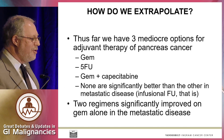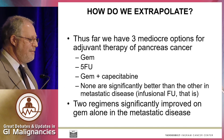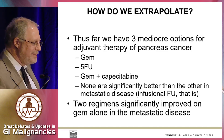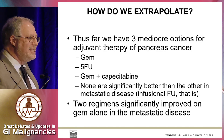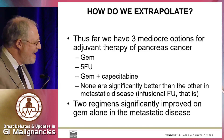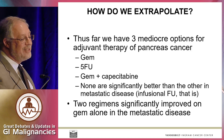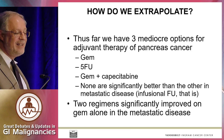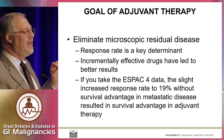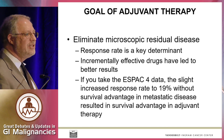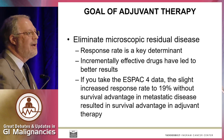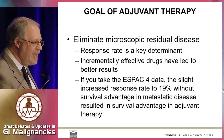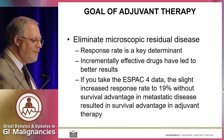So thus far, we have three mediocre options for adjuvant therapy of pancreas cancer: Gem, 5FU, and GemCape. You can argue that GemCape is better than the others, but of course — as Axel and Dr. Ilson sit late at night planning these meetings, going 'let's give Jordan a topic that has zero data whatsoever to debate' and then snickering — two regimens significantly improved on Gem alone in metastatic disease. Our goal here in adjuvant therapy is to eliminate microscopic residual disease. Response rate is the key determinant for that. And once again, it's systemic recurrence that kills most of the patients. So if you take the SPAC-4 data, there's a slight increased response rate to 19% without a survival advantage in metastatic disease. And that supposedly yielded a survival advantage in adjuvant therapy.